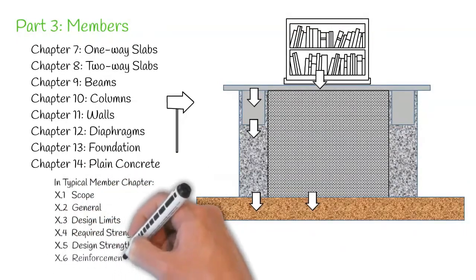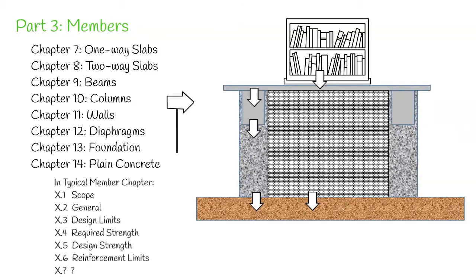Starting with the scope and general, a designer would like to know the design limits to design a member. Required strength is determined by the load and then ensure the member has adequate design strength to meet the demand. After that, check for minimum and maximum reinforcement limits and finally detail the design. Other extra provisions are added to the end.